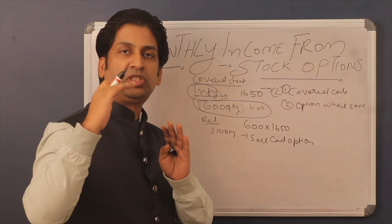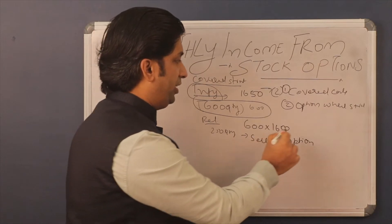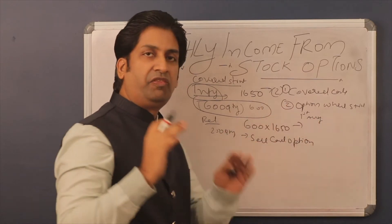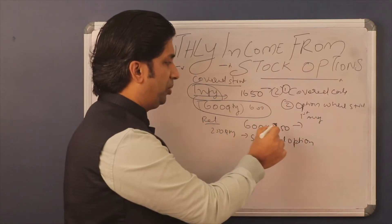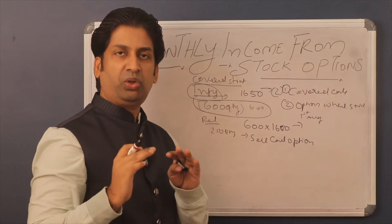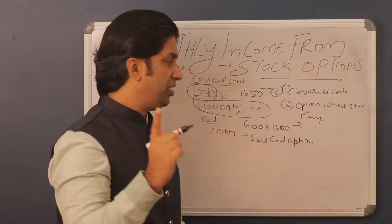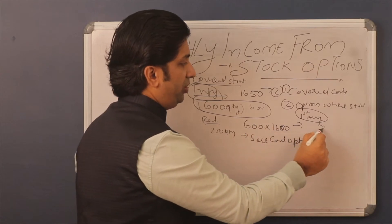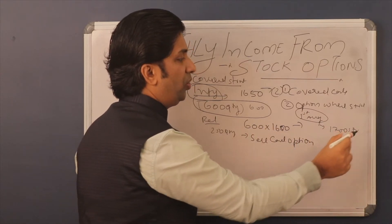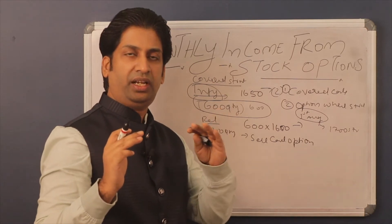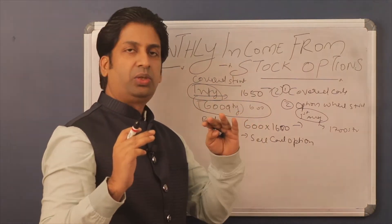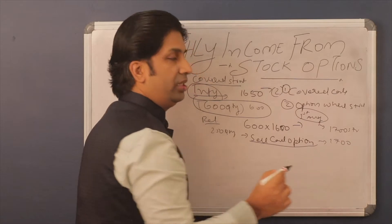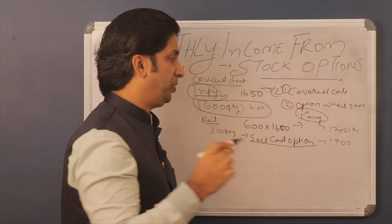At the start of the month, you have to check which strike has the most open interest. For example, this is August — you already have Infosys with you. You check the open interest data and let's say the 1700 strike price has the most open interest. So you sell the 1700 call option, and let's assume that call option is priced at 10 rupees.